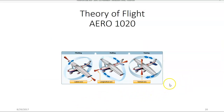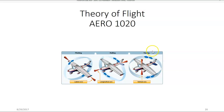Another thing we need to learn in theory of flight is the movement around the different axes of the aircraft. There are three axes around which the aircraft moves. The first is the lateral axis, which runs from wingtip to wingtip, and the movement around the lateral axis is known as pitch. The second is the longitudinal axis, which runs from the nose back to the tail, and the movement around the longitudinal axis is known as roll. The third is the vertical axis — a straight line up and down through the center — and movement around that axis is known as yaw.